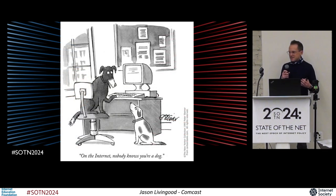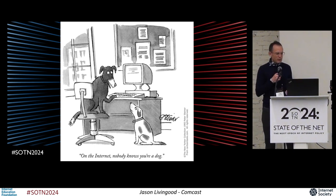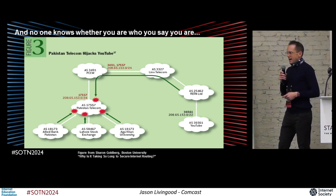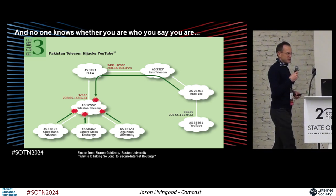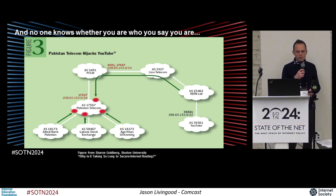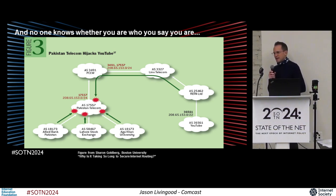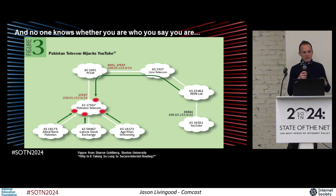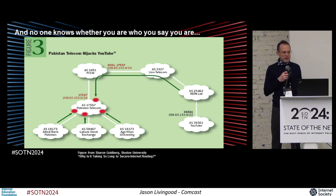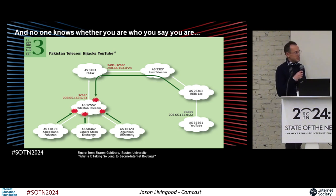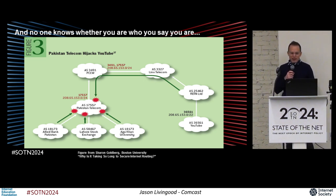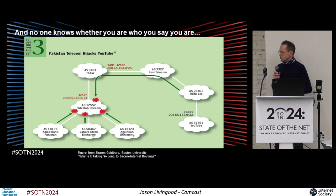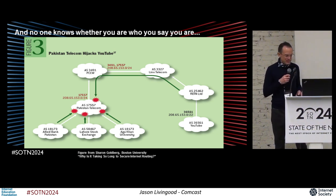I think everybody recognizes this old cartoon on the internet — nobody knows that you're a dog. At the same time, nobody knows if Pakistan is YouTube. And that's because of the great system of highly insecure routing security that the internet has today, which basically allows anybody to announce that they are the destination for a particular site, which as you might imagine is pretty problematic. This is a classic canonical example where Pakistan accidentally announced that they were YouTube and suddenly all of YouTube's global traffic routed to Pakistan for a little while — kind of a problem.